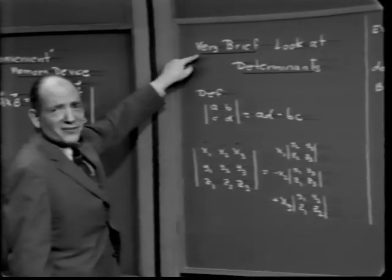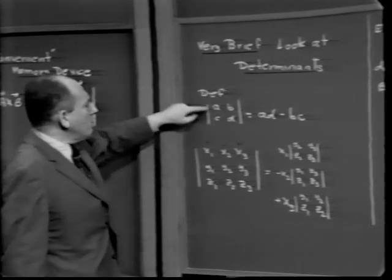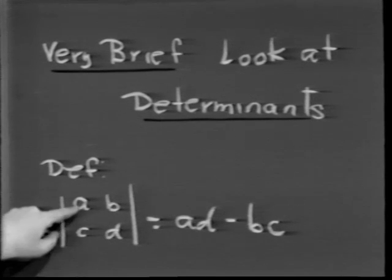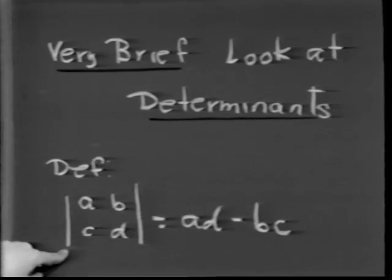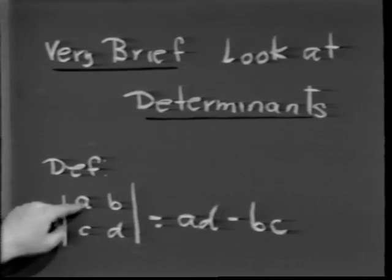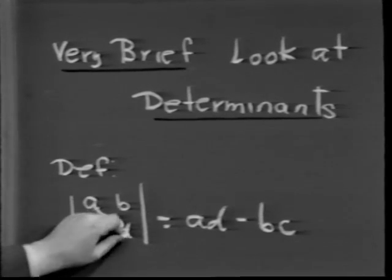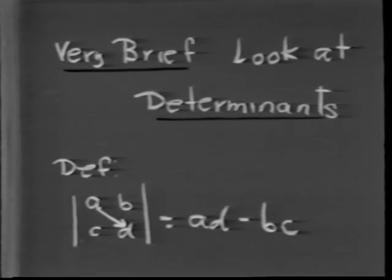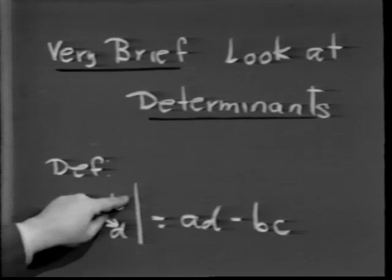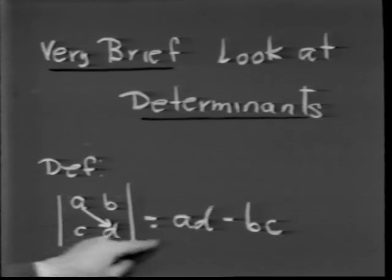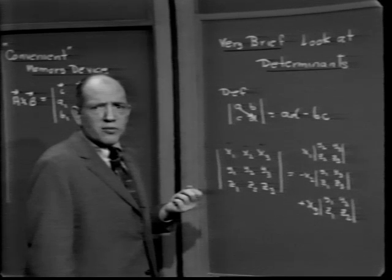A 2×2 determinant is a square array of numbers with two rows and two columns, indicated with absolute value signs. By definition, the 2×2 determinant |a b; c d| equals ad − bc: the upper left times the lower right, minus the upper right times the lower left. In block 7 of our course, we'll cover this in much more detail.